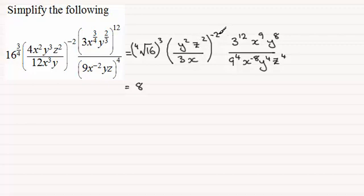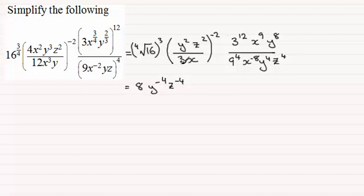For this bracket all to the power minus 2, we've got y squared to the power minus 2 — that's 2 times minus 2 which is minus 4, so y to the power minus 4. Similarly, z to the power minus 4. Then 3x all to the power minus 2 gives 3 to the power minus 2, and x to the power minus 2.